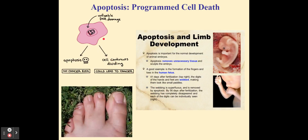The way your body addresses damaged cells is through apoptosis — programmed cell death. When your body recognizes a damaged cell, or one with damaged DNA or enzymes, it prevents those damaged cells from continuing to reproduce and passing on errors by causing the cell to destroy itself. Apoptosis also provides definition to your facial structures, fingers, and toes. The reason you don't have webbing between your toes is because of apoptosis.